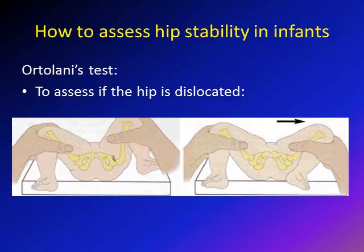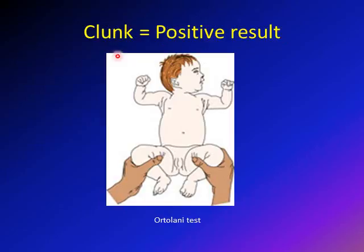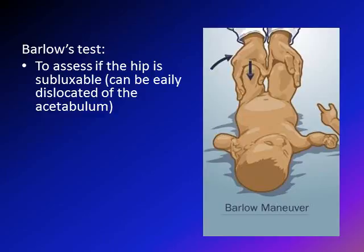To summarize: in the Ortolani test, the knee is in the palm, thumb on the medial aspect, outer four fingers on the lateral aspect. You abduct the extremity — bring it outward — one side at a time. A positive result is a clunk, not clicking. If there is a clunk, the hip was dislocated and with this maneuver you put it back into position.